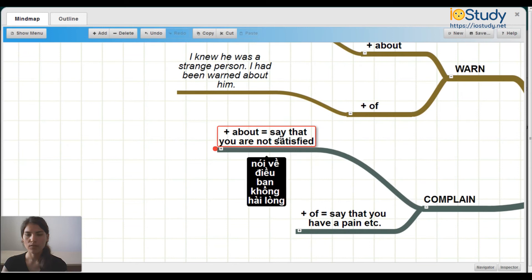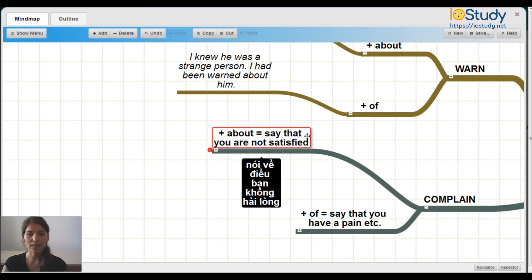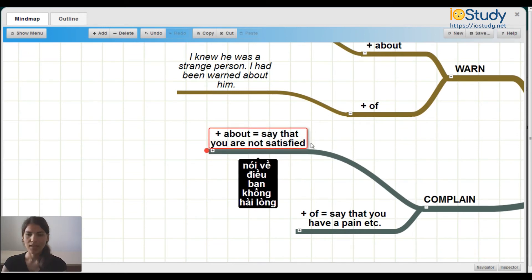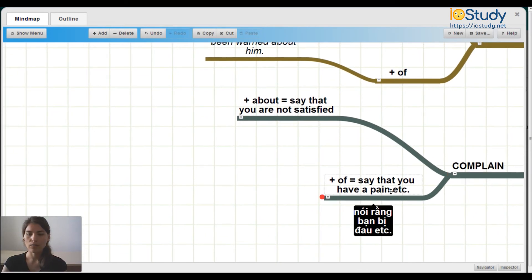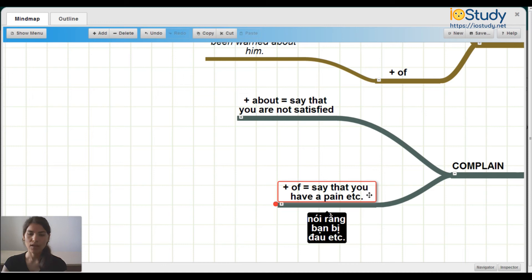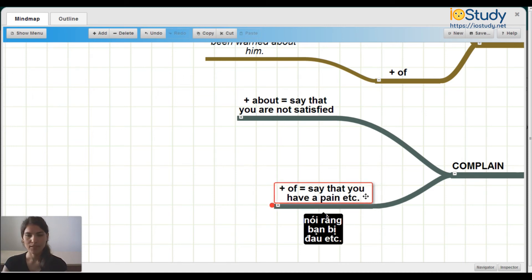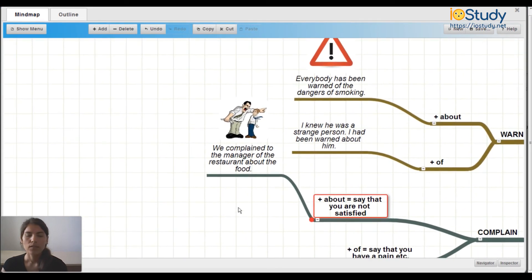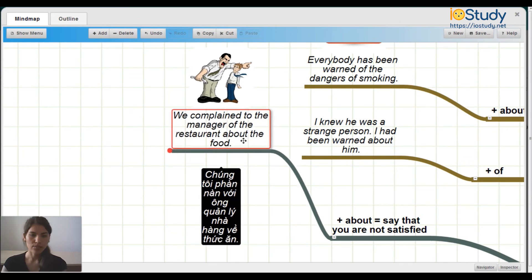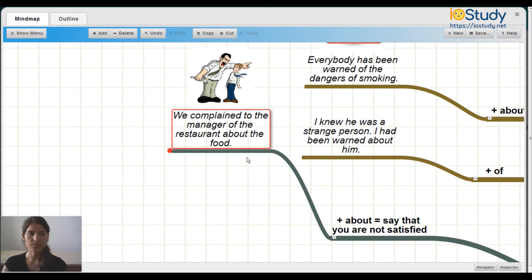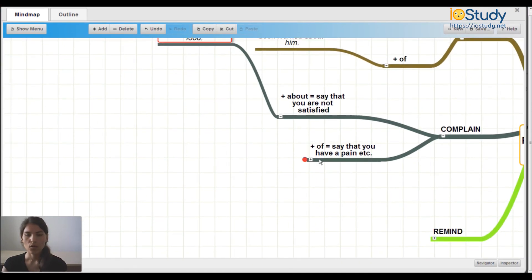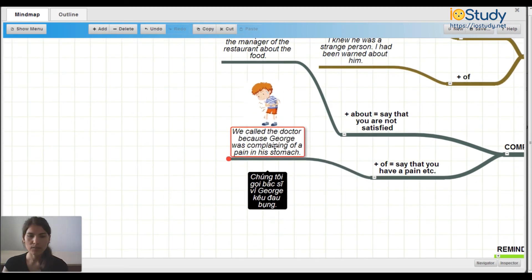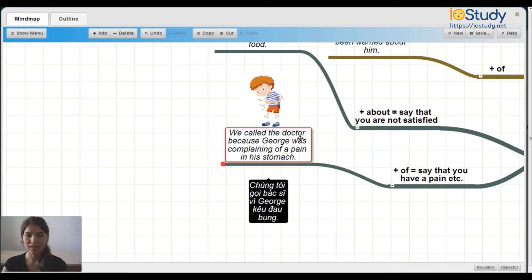Complain. To complain about means to say that you are not satisfied, and to complain of means to say that you have a pain, etc. Let's look at about. Complain about something. We complained to the manager of the restaurant about the food, means you are not satisfied. And of: we called the doctor because George was complaining of a pain in his stomach. It means that you have a pain.